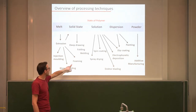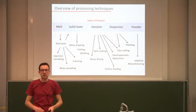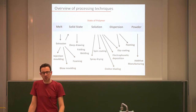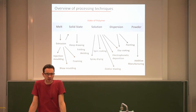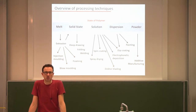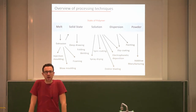We also looked at blow molding and forming as more specialized techniques. What we've seen is that we really need fundamental understanding of polymer science — for example, the glass transition temperature and chemical properties — in order to tailor, control, and optimize our processes.